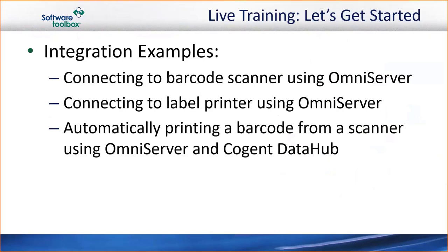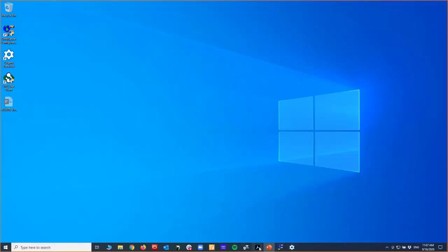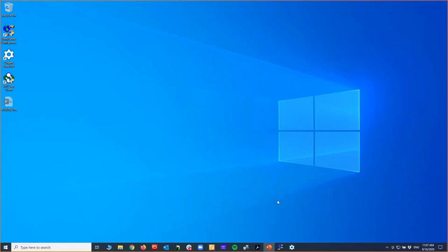I'm going to jump right into the live training. The integration examples include connecting to a barcode scanner using OmniServer, setting up connectivity to a label printer using OmniServer, and setting up an automatic point-to-point bridge between my scanner and my printer using Cogent Data Hub. I have a video set up for my actual devices so you can see what I'm doing when I'm actually scanning and printing.